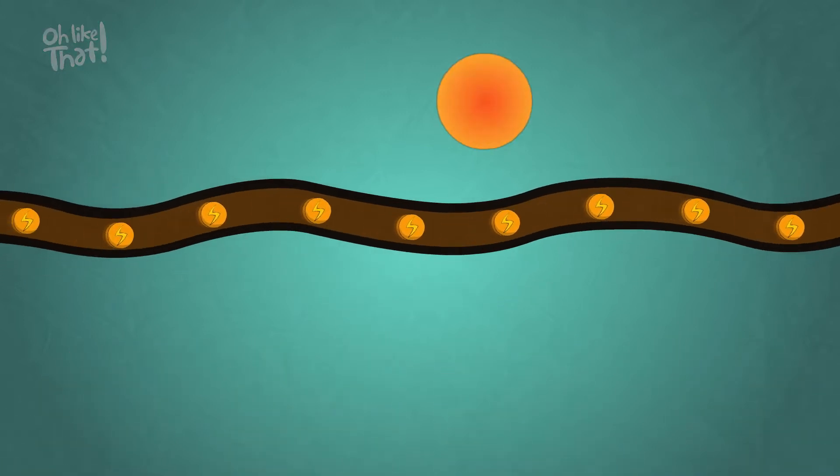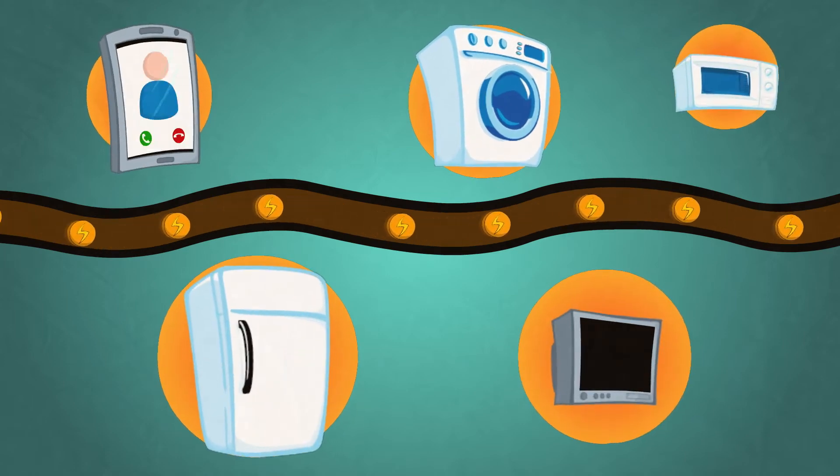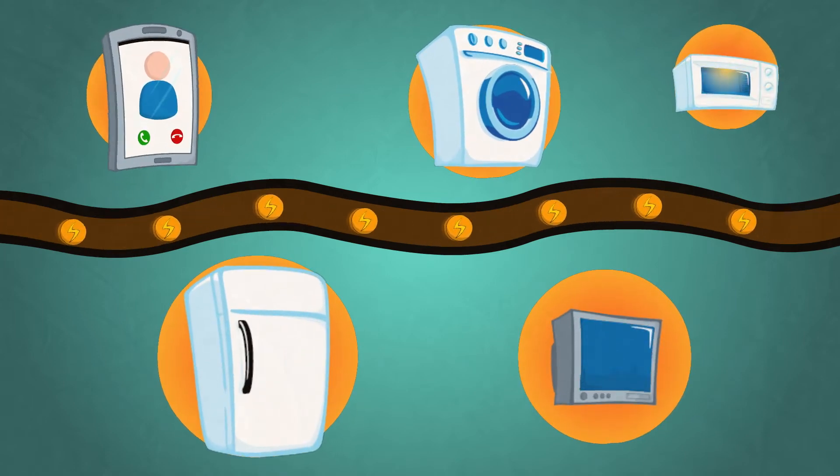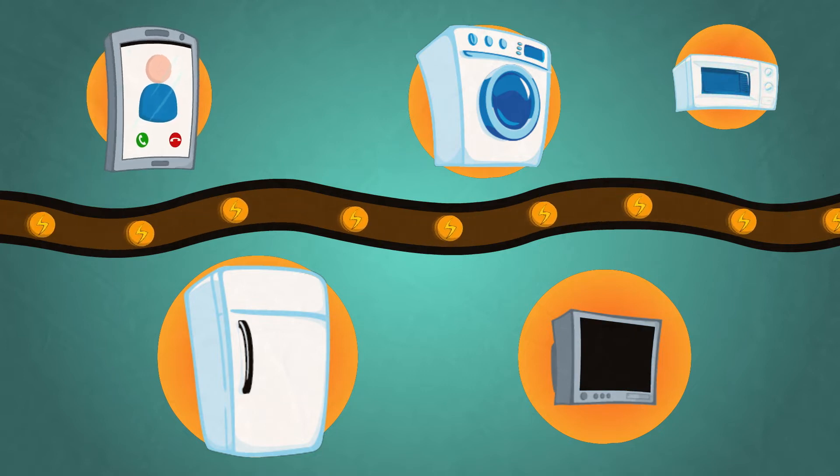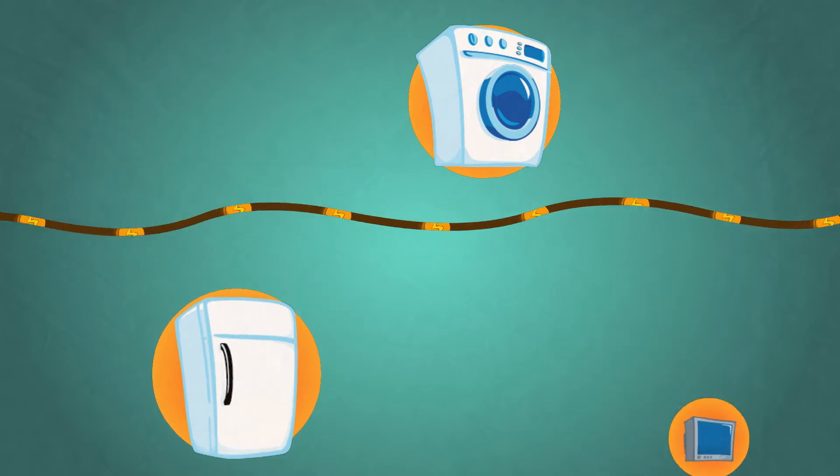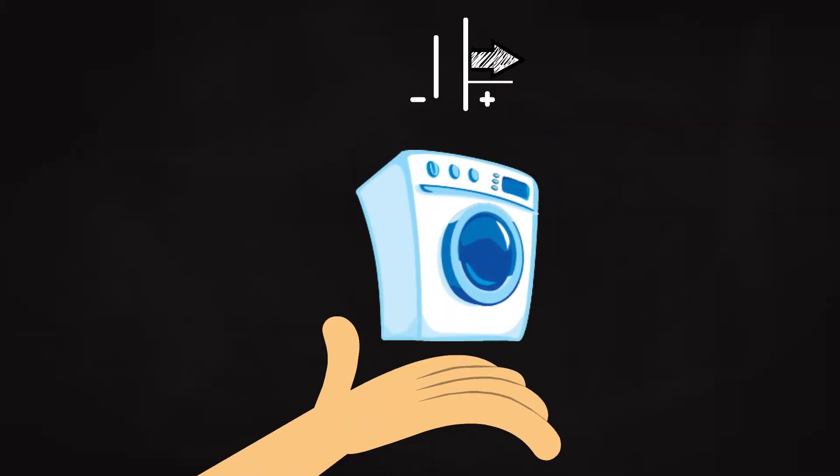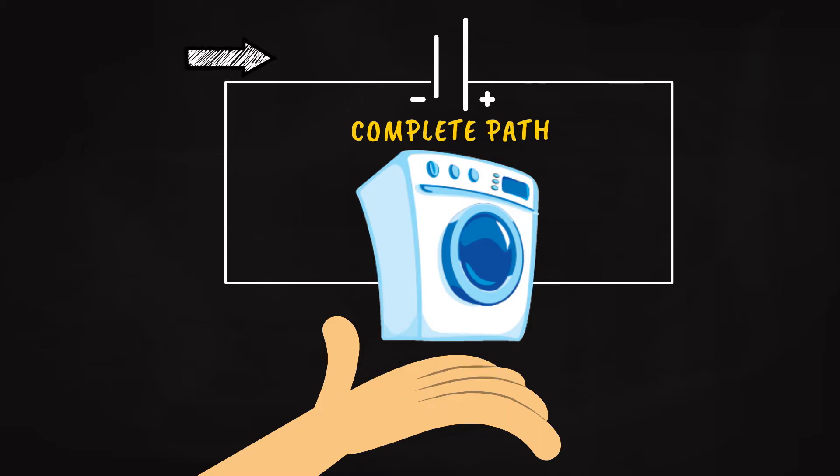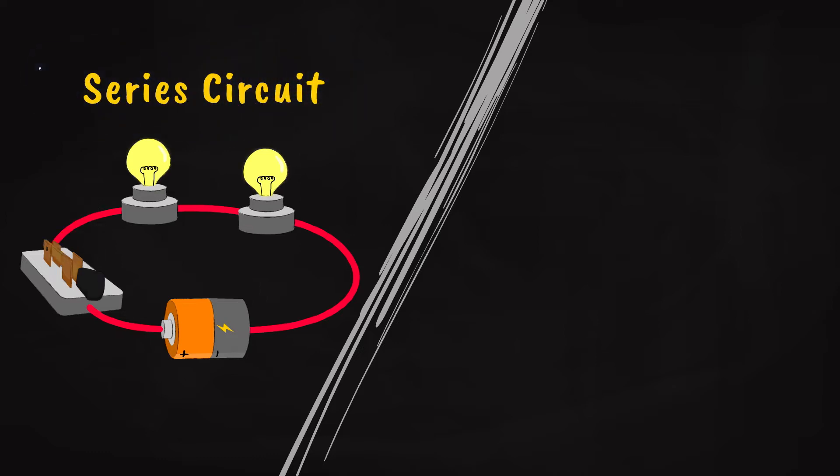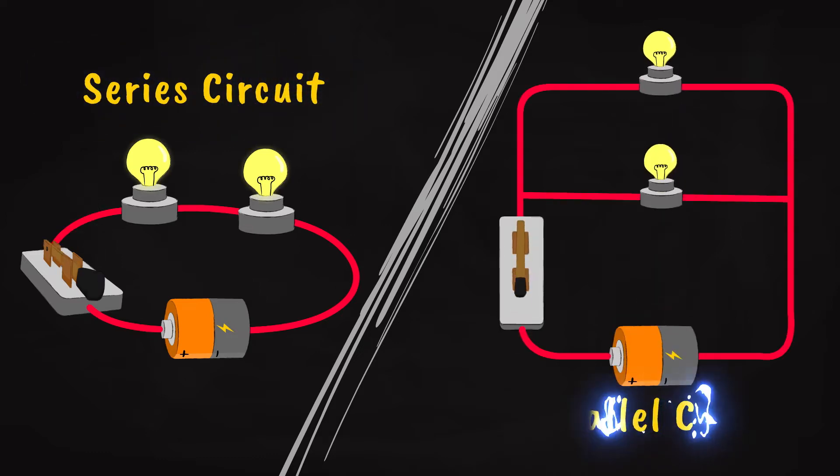We get to enjoy the many uses of electricity when an electrical circuit is complete because it creates a path for transmitting electric current. A complete circuit is the only way electricity can flow to do its job. In this video we'll examine two types of electrical circuits: series circuit and parallel circuit.